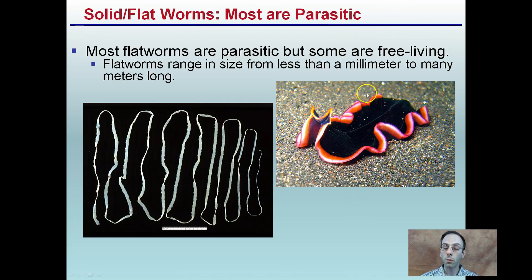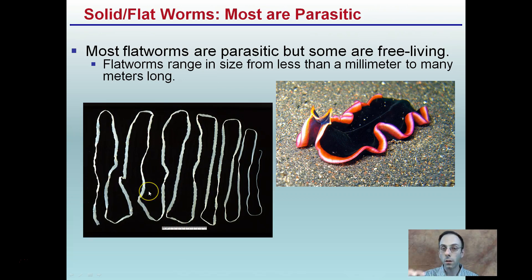This is a real-world image of what they look like. Most flatworms are parasitic, though some are free-living. Flatworms range in size from less than a millimeter to many meters long — here's a tapeworm, which is extremely long, while others are very tiny.